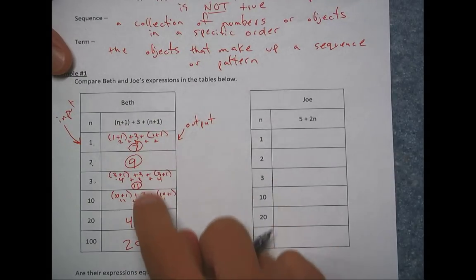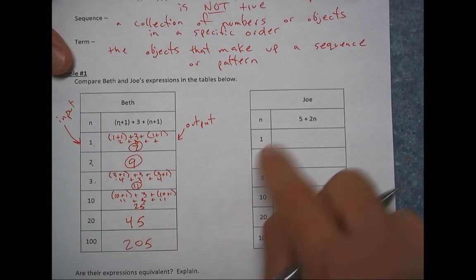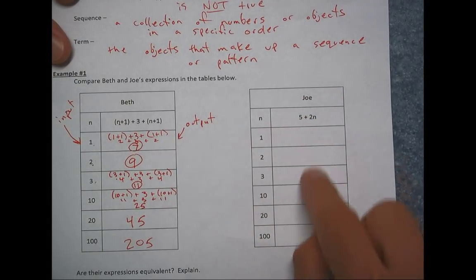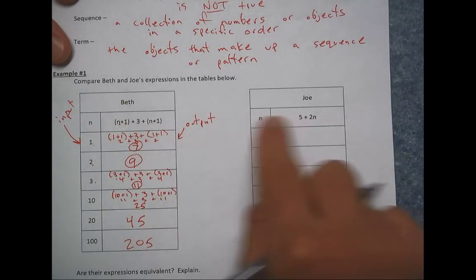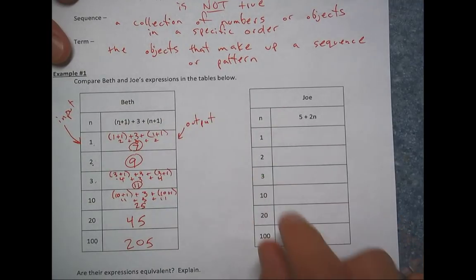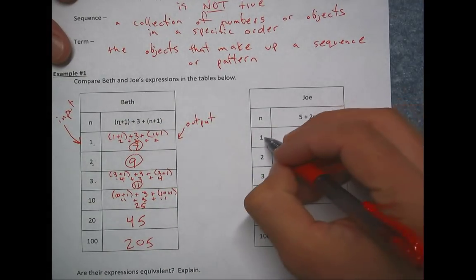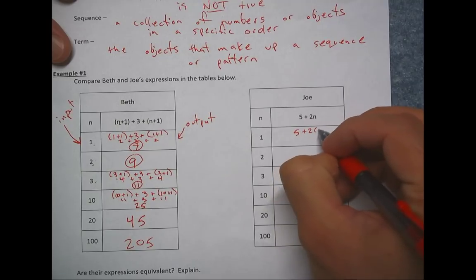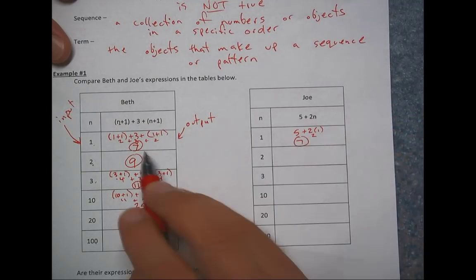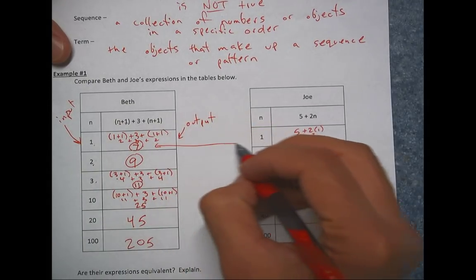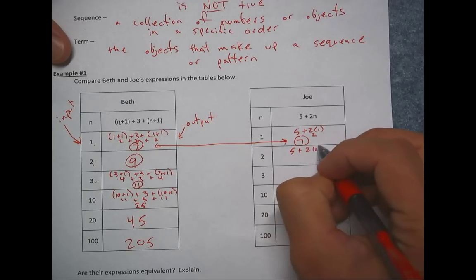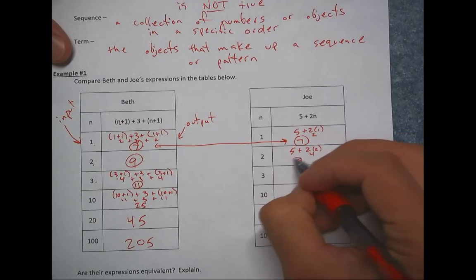So I have all of my outputs for these specific inputs. If I come over to this expression, and I test these inputs, and I get the same outputs, that would prove that these two expressions are equivalent. If I were to get different outputs, then I would say that these are not equivalent. So plugging in here, I'm going to plug one in. So this is five plus two times one, which is two. So five plus two gives me seven. So far, so good. These are the same.